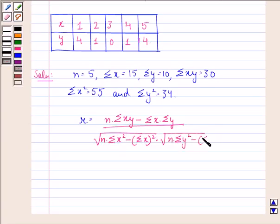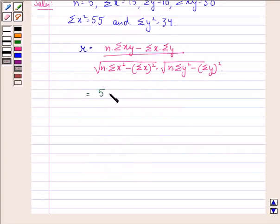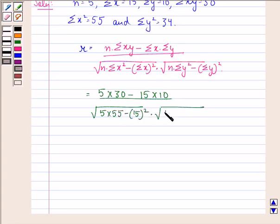Now we simply put in the values. We get 5 times 30 minus 15 times 10, divided by square root of 5 times 55 minus 15 squared, multiplied by square root of 5 times 34 minus 10 squared.